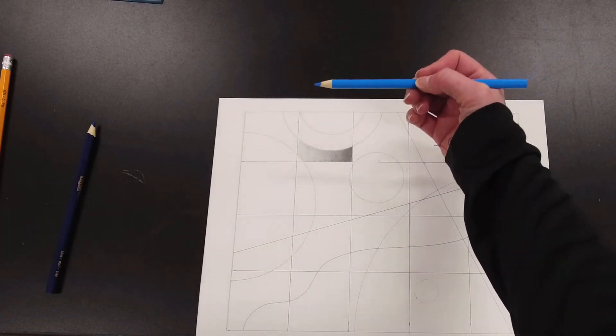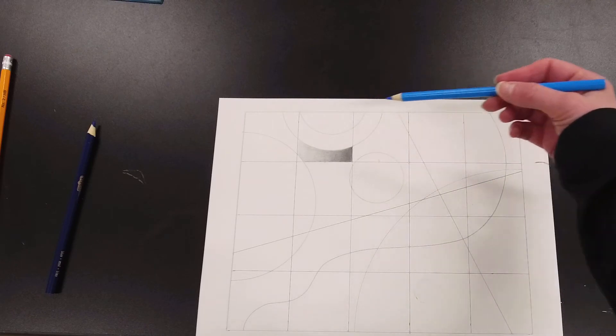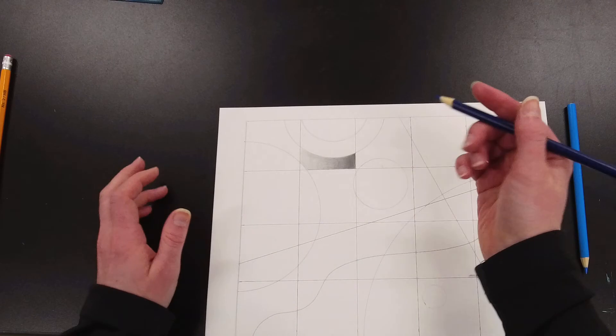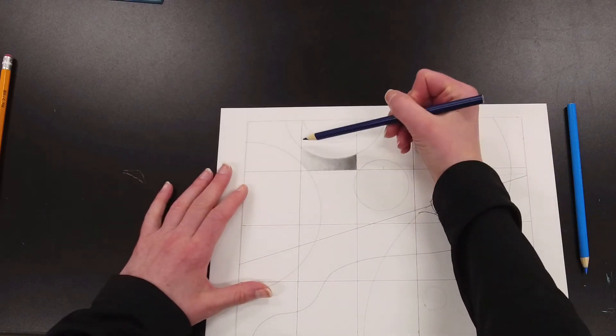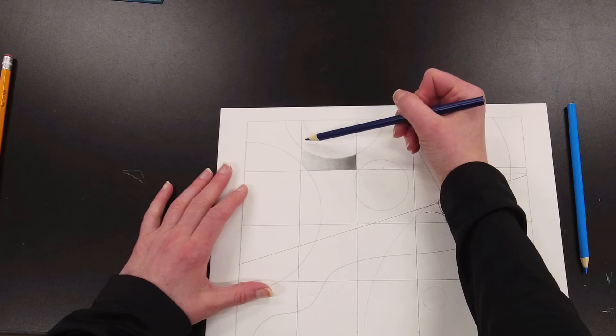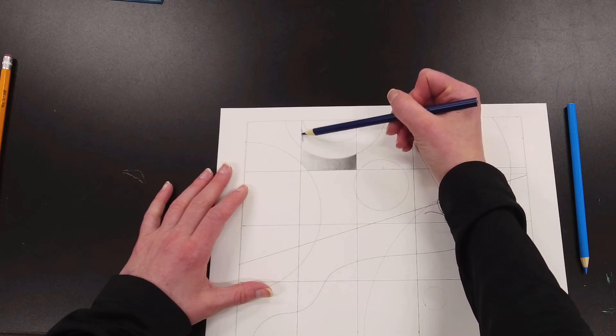Since I'm right-handed, to go from dark to light going left to right, I'm going to start with my darker color because I have a dark blue and I have a light blue. I'm just going to hold my pencil pretty far back.